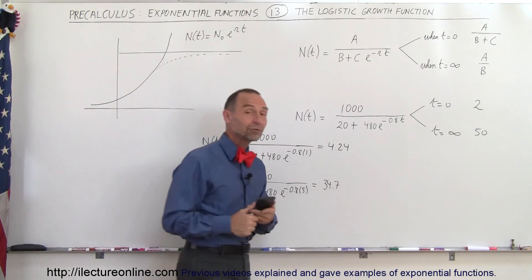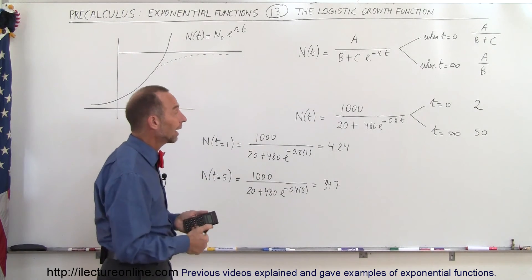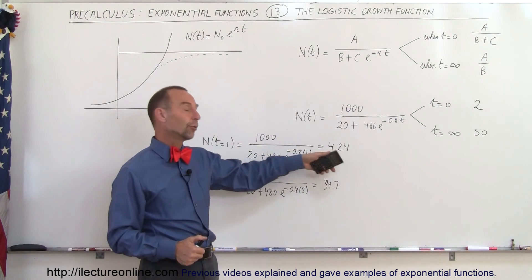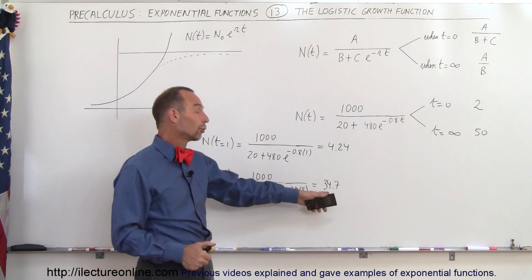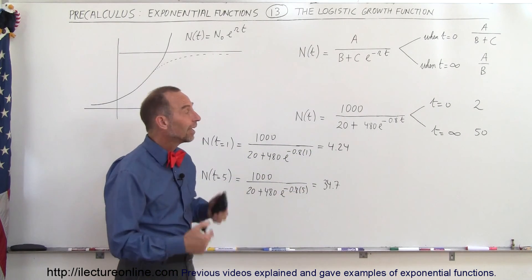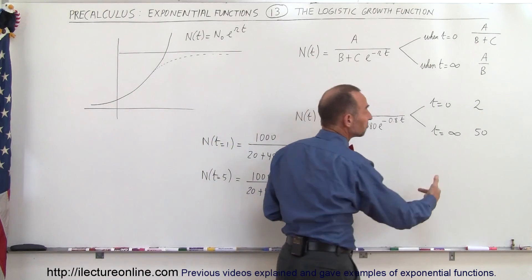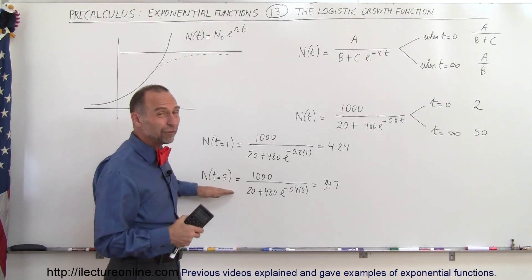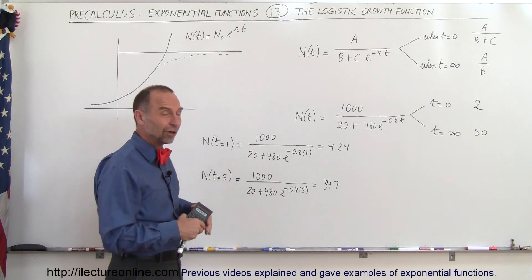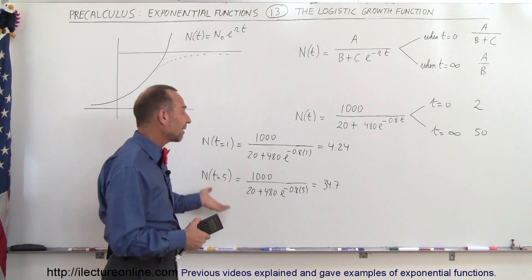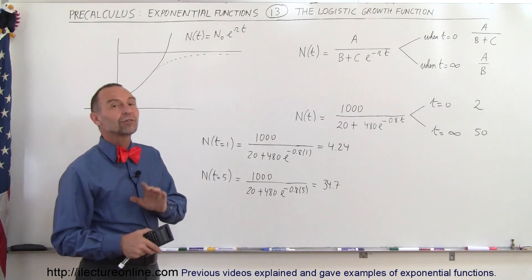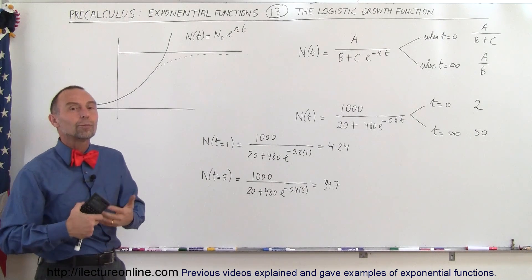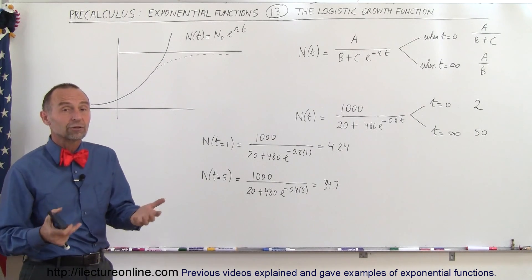So here we have the growth, where two individuals show up at the beginning, time equals 0, after one year they've grown to 4, after five years they've grown to 34, almost 35, and you can see that when time becomes infinite, you grow to 50. Well, probably you get close to 50 when t is equal to 10, so it's not going to take an infinite amount of time, but it looks like maybe after about 10 years or so, the population has grown to about 50, and then since the resources are limited, the population will not grow beyond that number, because there's only so much to go around.